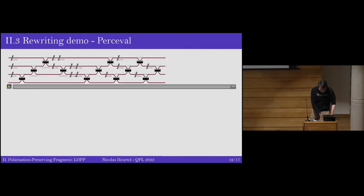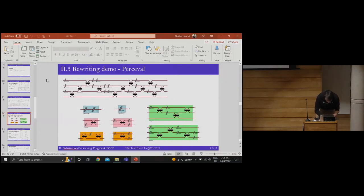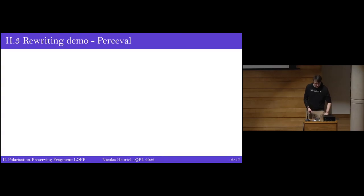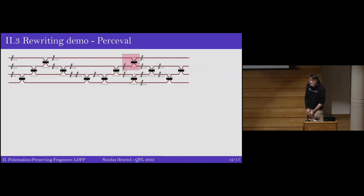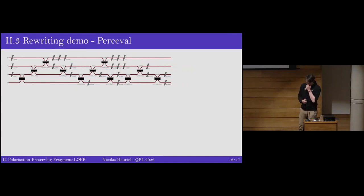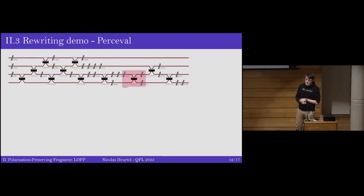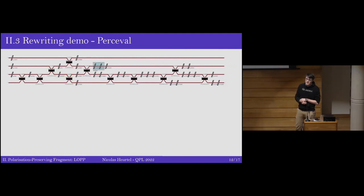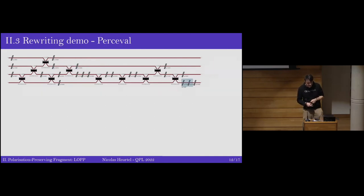A question about the interpretation of zero preparations and zero detectors: they both seem to be sent to an identity scalar. How can something from zero to one wires and something from one to zero wires both map to a scalar? The zero source has type zero-to-one and the zero detector has type one-to-zero. The semantic is zero because it's a direct sum — there is only zero on that wire, not on the full circuit.